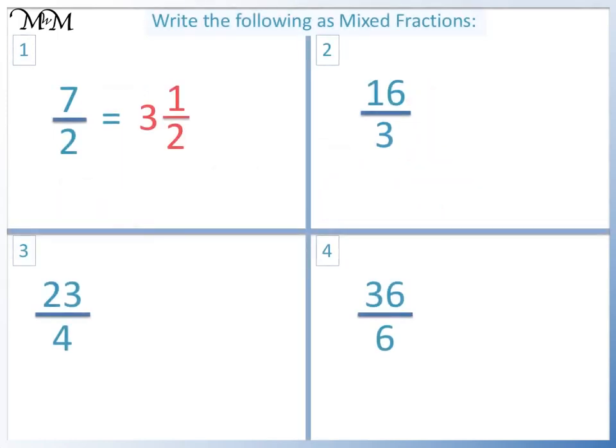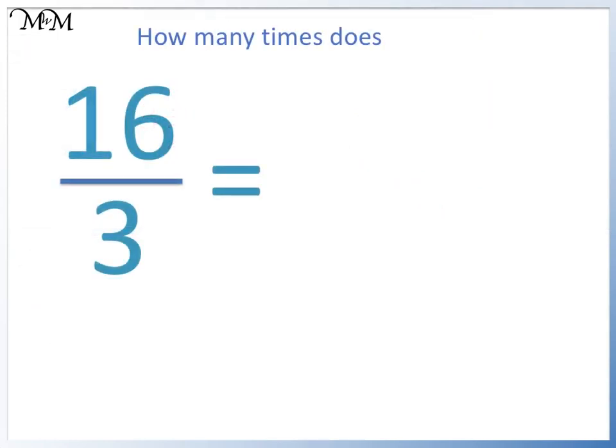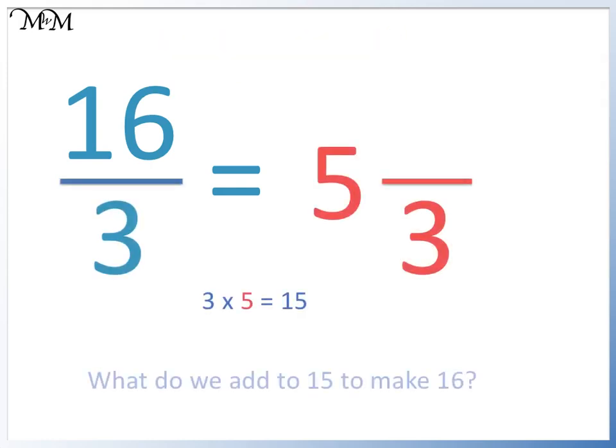Question 2. 3 goes into 16 5 times. We add 1 more to 15 to get 16. 16 thirds equals 5 and 1 third.